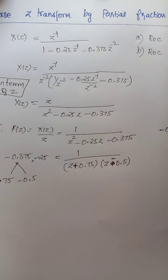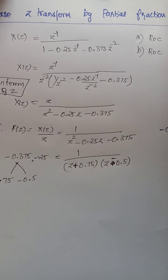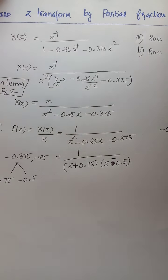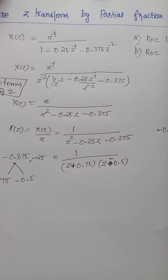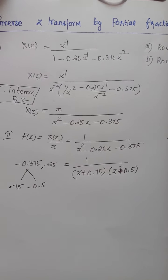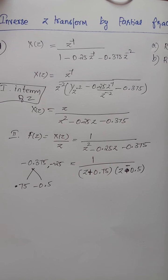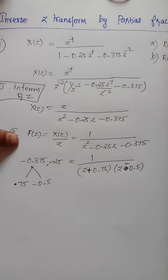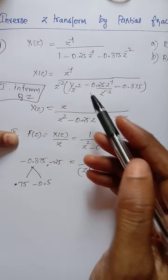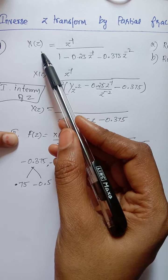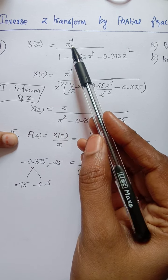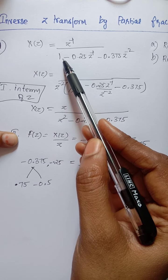In this video we are going to discuss inverse Z-transform, and we are going to find the inverse Z-transform using the partial fraction method. Consider this problem: X(z) equals z⁻¹ divided by 1 minus 0.25z⁻¹ minus 0.375z⁻².